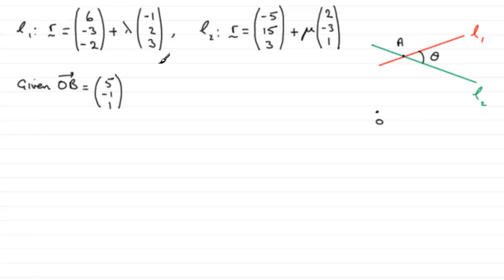Now, if it does, it should satisfy this equation. There's a value for lambda that would give us these components. And you could just look at this, most probably, and see that that value of lambda is 1. 6 plus 1 times minus 1, 6 minus 1 gives you that 5. And it's consistent all the way down. Minus 3 plus 2, that's going to be minus 1. And minus 2 plus 3 is 1.